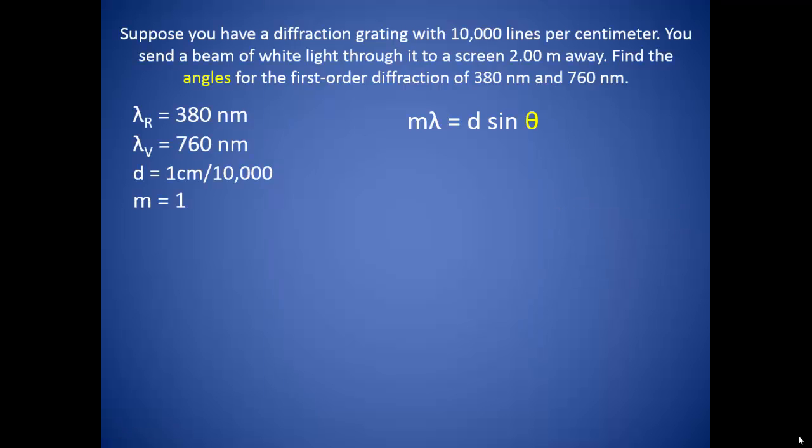Suppose you have a diffraction grating with 10,000 lines per centimeter. You send a beam of white light through it to a screen 2 meters away. Find the angles for the first order diffraction of 380 nanometers and 760 nanometers.